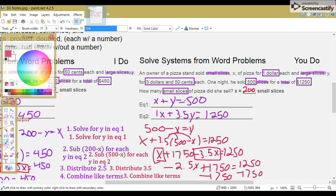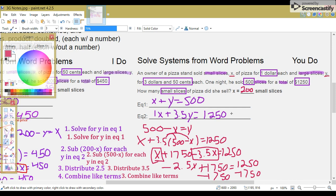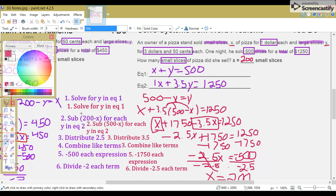These are your two equations for the system. The first thing you want to do is box your numbers and highlight your keywords. It's still looking for small slices of pizza that they're selling. First step is the same. Solve for Y in equation 1. 500 minus X equals Y.